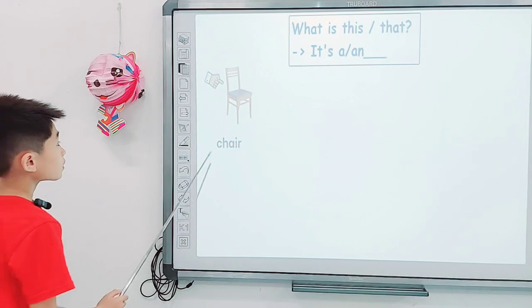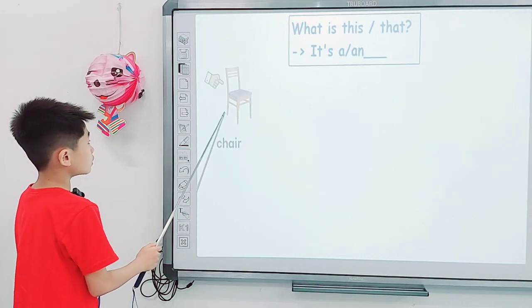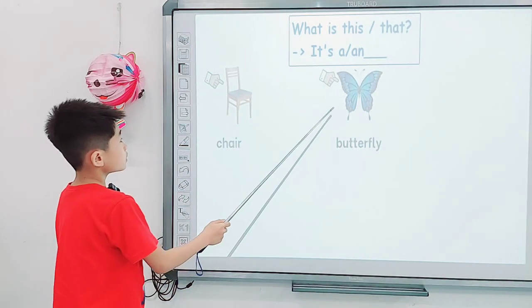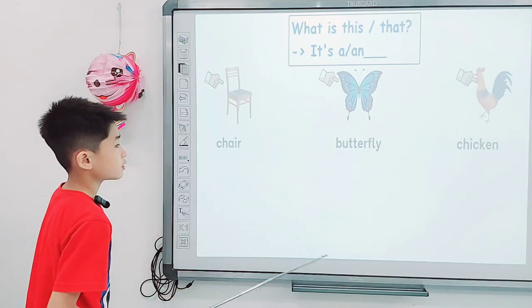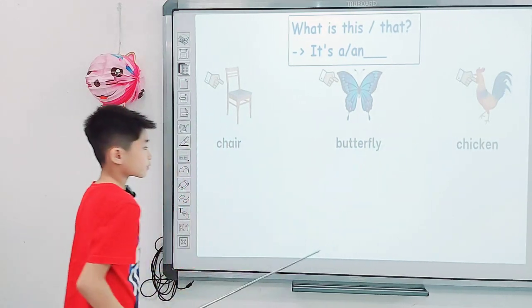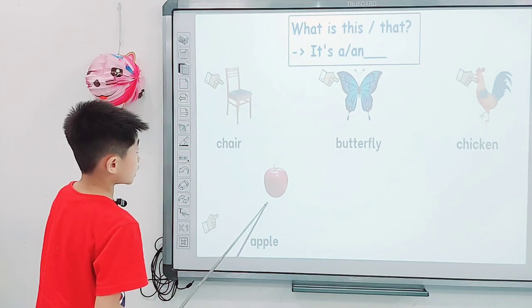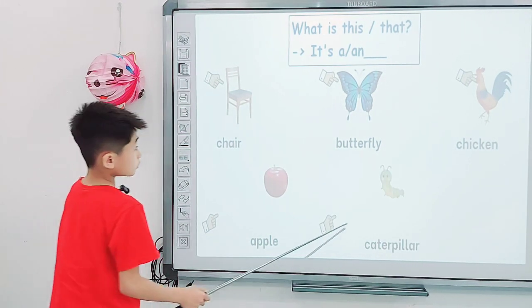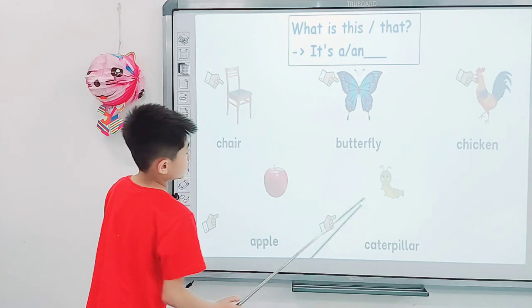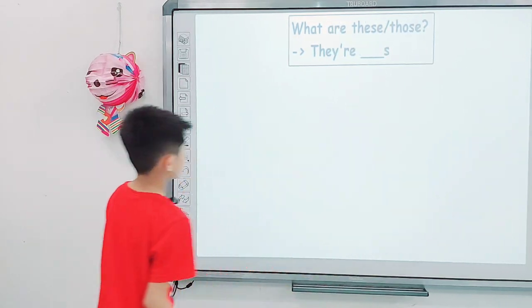Tell me what it is. It's a chair. What is it? It's a butterfly. And what is this? It's a chicken. And what is that? It's an apple. And what is that? It's a caterpillar. And what is that? It's a mosquito.